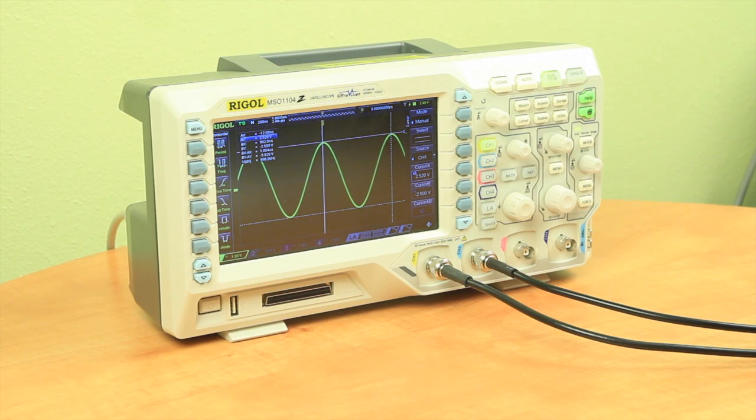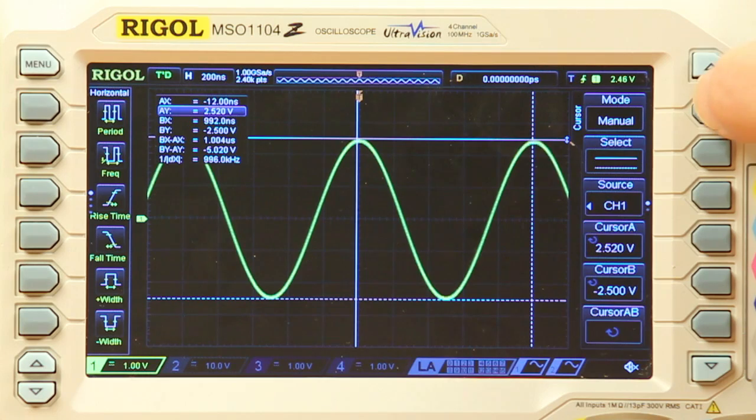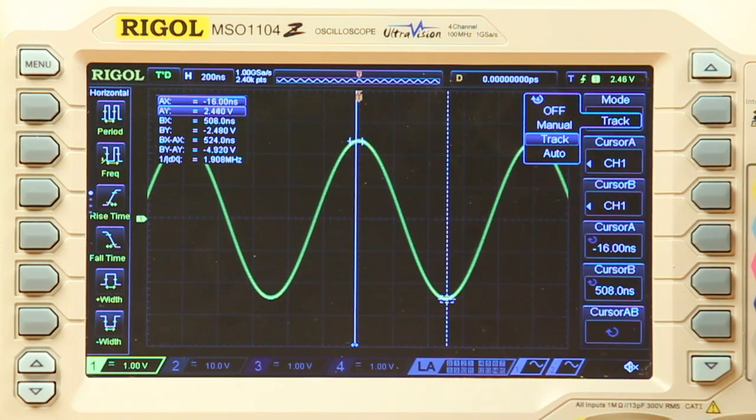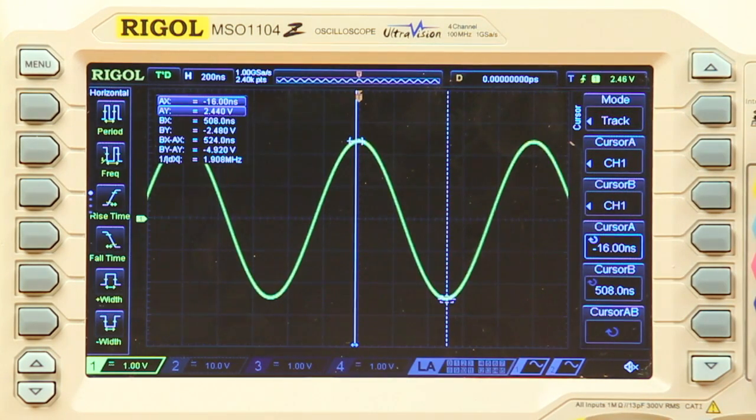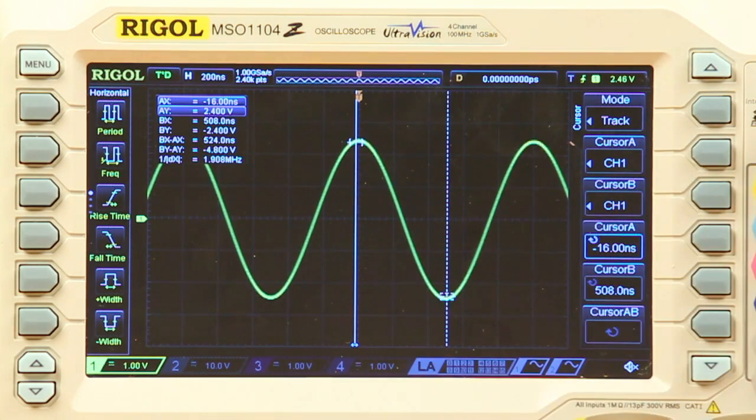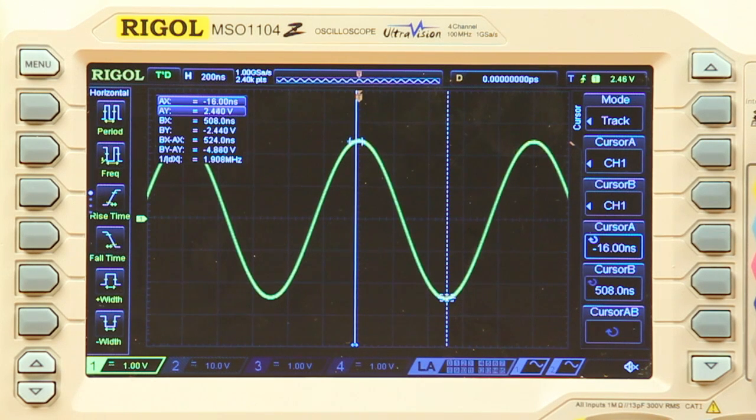Now, let's go to tracking mode. As before, we have two vertical lines indicating the X axis cursors. But the Y axis cursors have been replaced by these markers. They'll automatically track as the waveform changes.